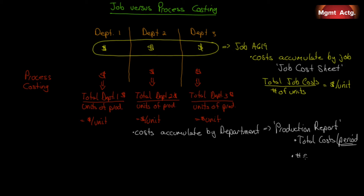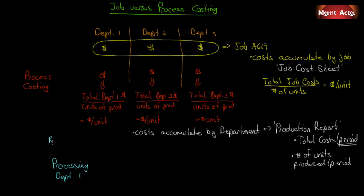Figuring out cost per unit: at a high level, if you spent this much money in the month and made this many units, you can figure it out — though it's not quite that straightforward. Processing department one is the first thing that happens in the line, where raw materials, direct labor, and manufacturing overhead are incurred and placed within that department in that time frame.